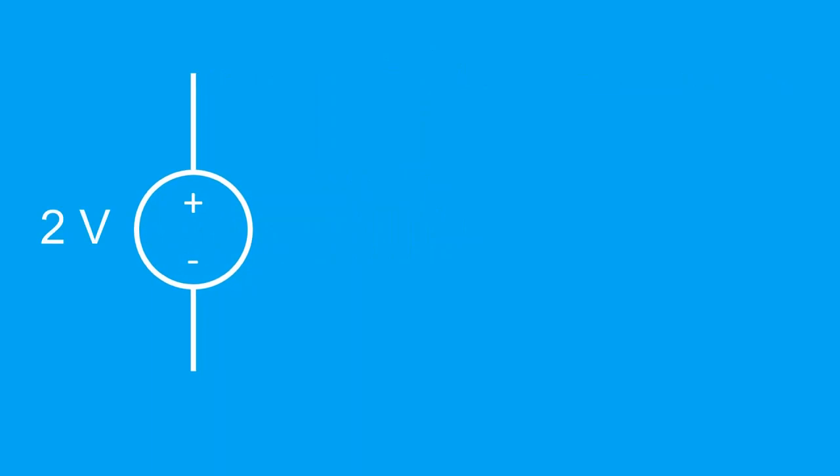Let's say we have a DC voltage source like this with a value of 2 volts. What this means is that between its two terminals, there is a change of 2 volts, and how the terminals are connected will affect the voltages of the nodes it's connected to.